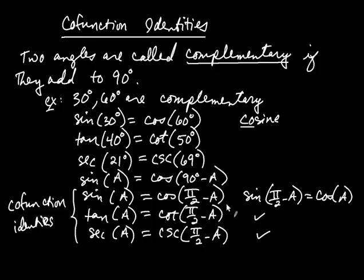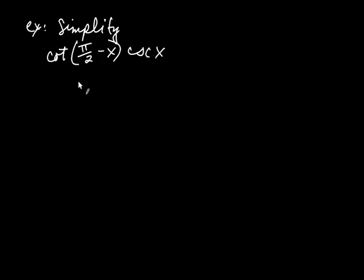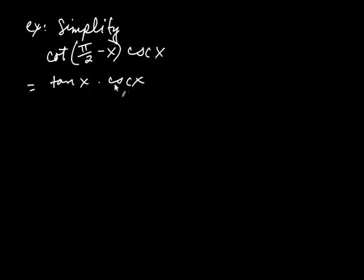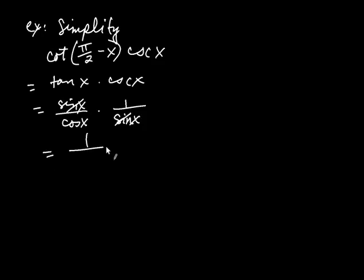Let's apply the cofunction identities to simplify cotangent of pi over 2 minus x, multiplied by cosecant of x. Seeing pi over 2 minus x, we recognize the cofunction relationship: the cofunction of cotangent is tangent, so cotangent of pi over 2 minus x equals tangent of x. Then tangent is sine x over cosine x, and cosecant x is 1 over sine x. The sine x's cancel, leaving 1 over cosine x, which equals secant x.